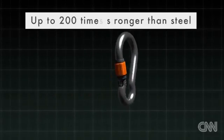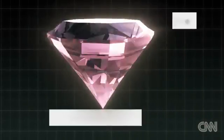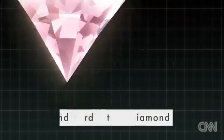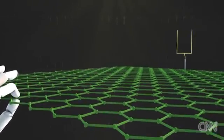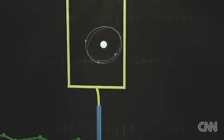It's so strong, it's up to 200 times stronger than steel and harder than diamond. It's so light that if you had a sheet of graphene the size of a football field, you could hold it between your thumb and finger and it wouldn't bend or break. And it's so thin, it's just one atom thick.